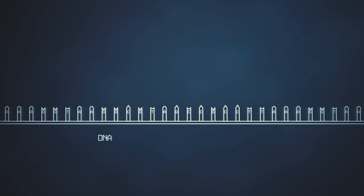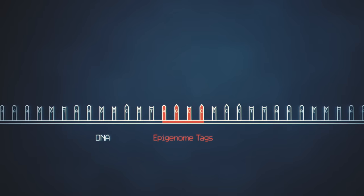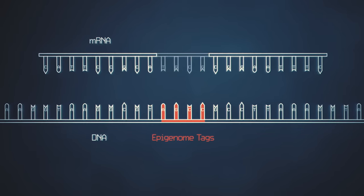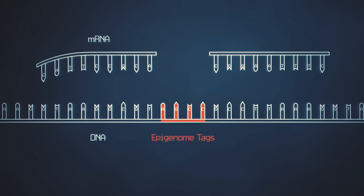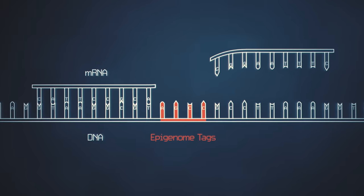The epigenome is a set of markers for the gene. It tags which genes in a cell should be switched on or off, which determines how and when they should be made.